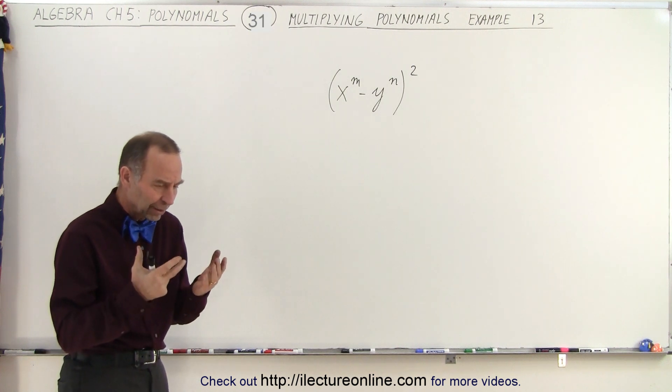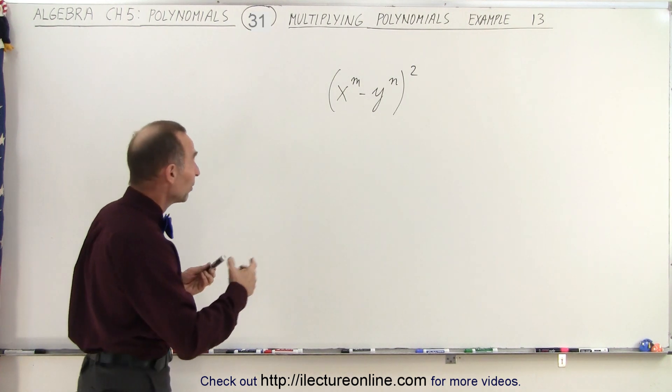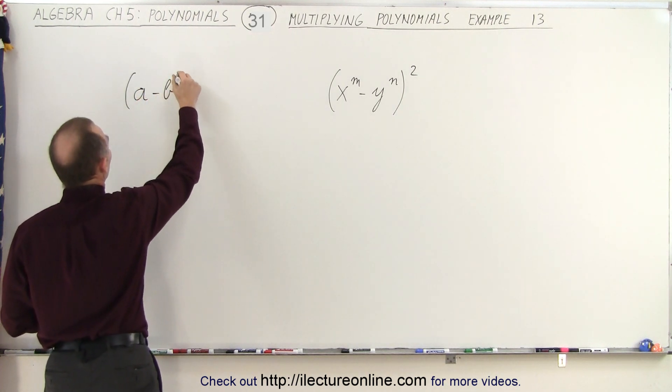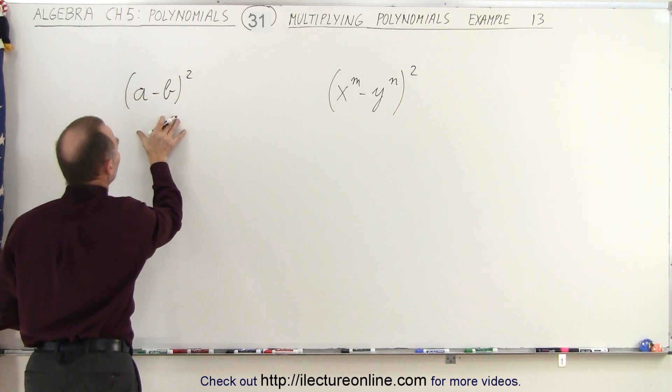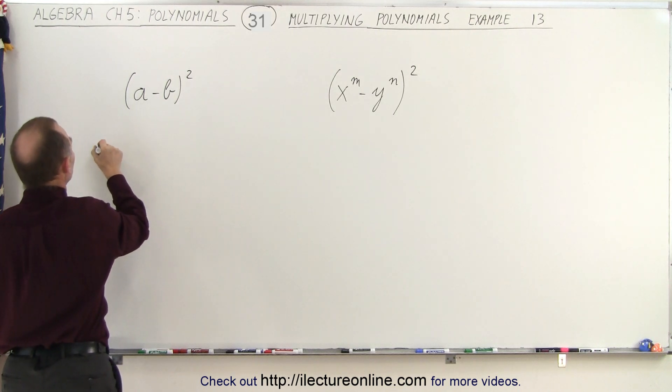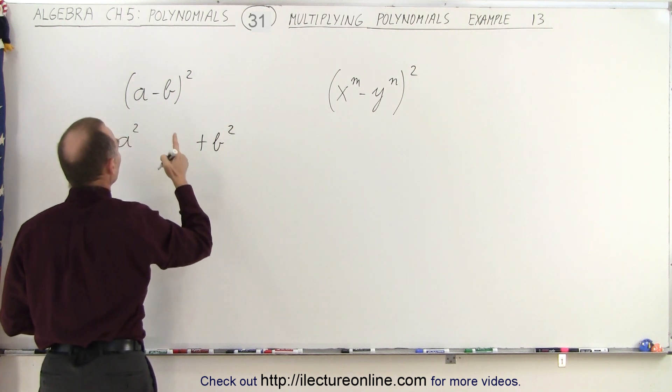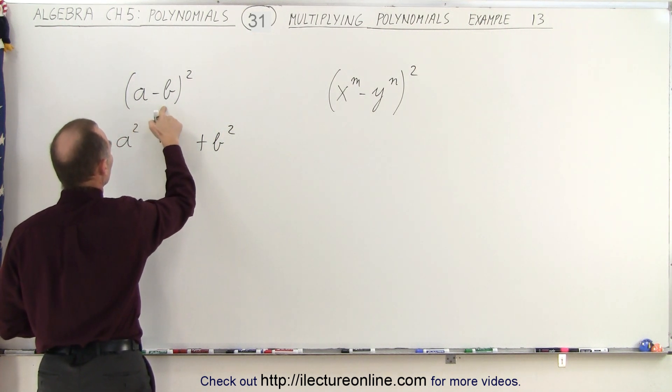Right away we should realize this is nothing more than the more complex form of A minus B quantity squared. When we see this, we know the solution is equal to the first term squared, plus the last term squared, and then twice the product of the two terms, which would be minus 2AB.